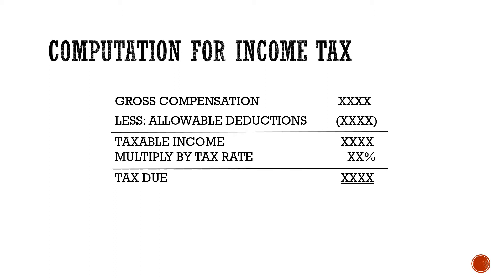Yung ating computation will start from the gross compensation. Ano ba yung generally papasok dito? Yung salary ng employee and other benefits. From the gross compensation, i-deduct doon natin yung tinatawag nating allowable deduction. After deducting the allowable deduction from the gross compensation, na-arrive na natin yung ating tinatawag na taxable income — yung income that will be subjected to the corresponding income tax rate in computing for the tax due. From the taxable income, multiply lang natin by the corresponding tax rate and we will arrive at the tax due.